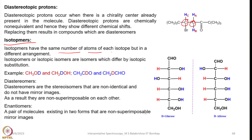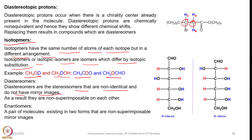What are isotopomers? Isotopomers have the same number of atoms of each isotope but in a different arrangement; they are isomers which differ by isotopic substitution. For example, if you take CH3OD, where H is replaced by D, and compare it with CH2DOH — the number of hydrogens and deuterium remains the same but the substitution is at a different place. These are all called isotopomers. Diastereomers are stereoisomers that are non-identical and do not have mirror images; as a result they are non-superimposable on each other.